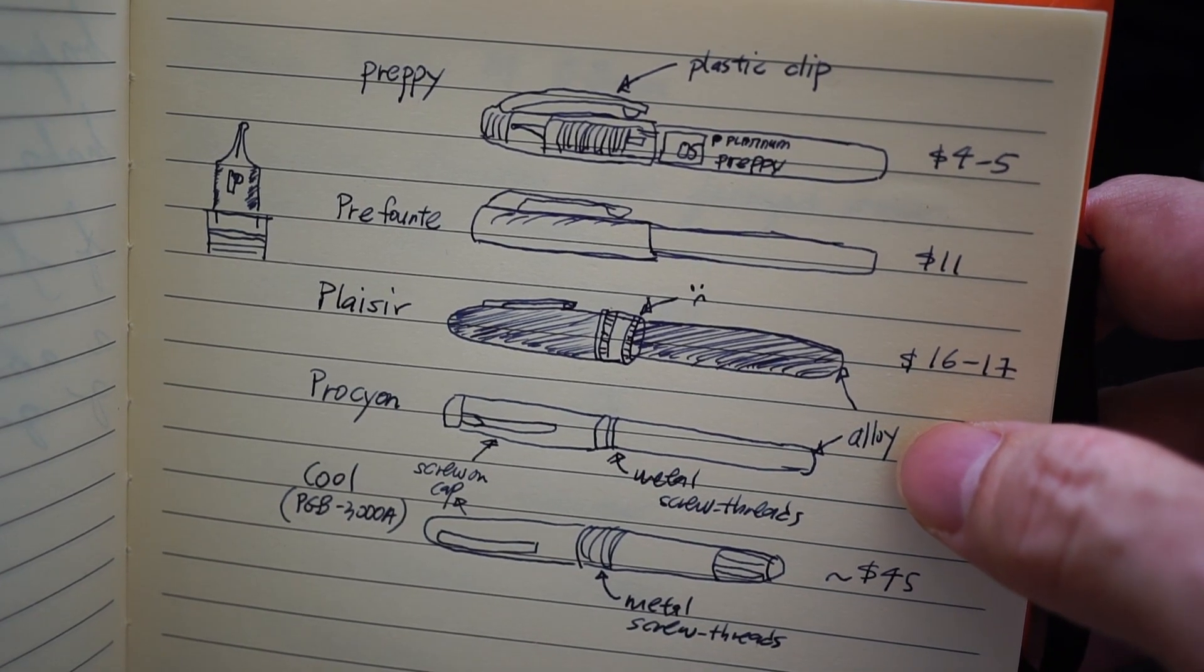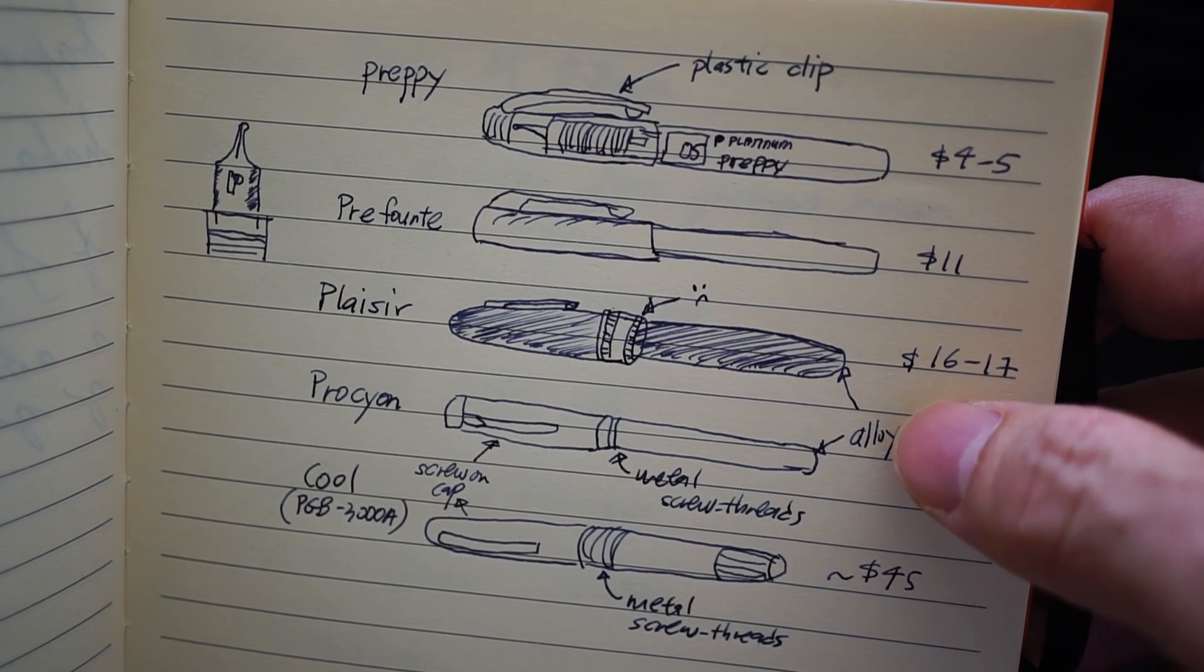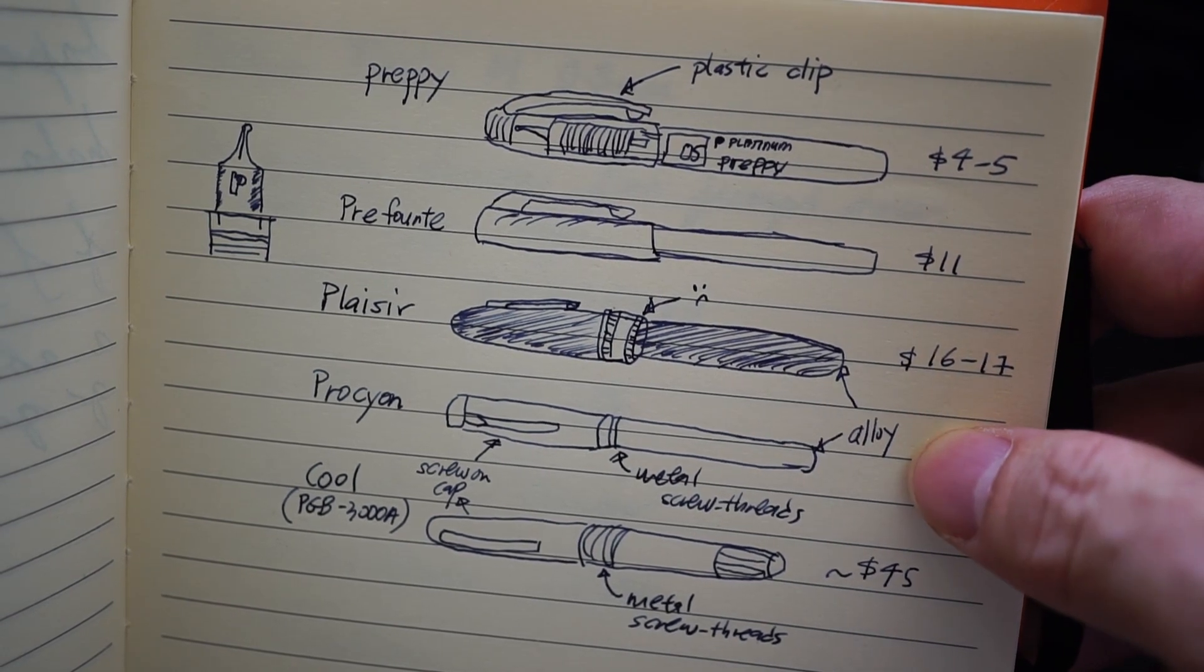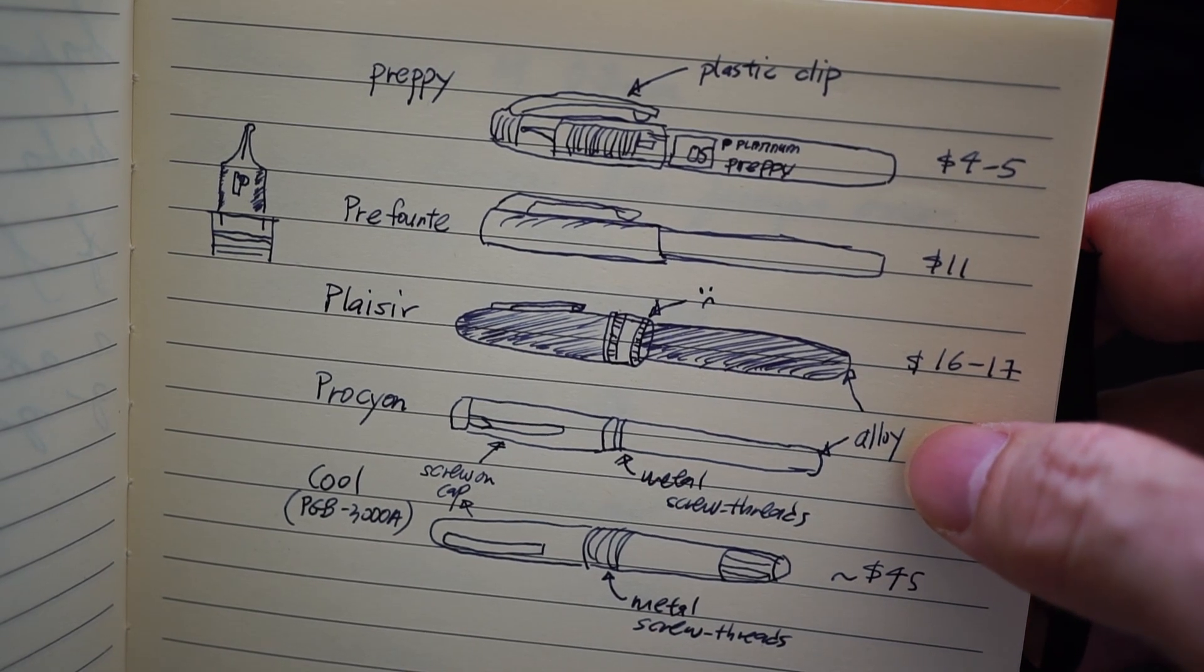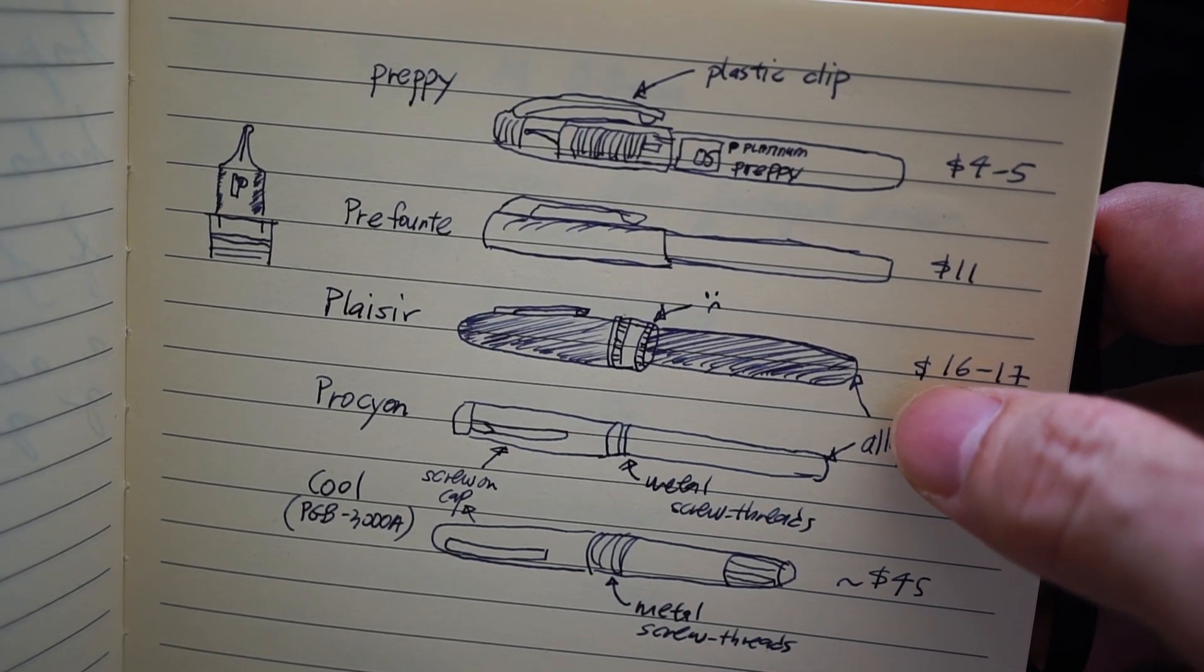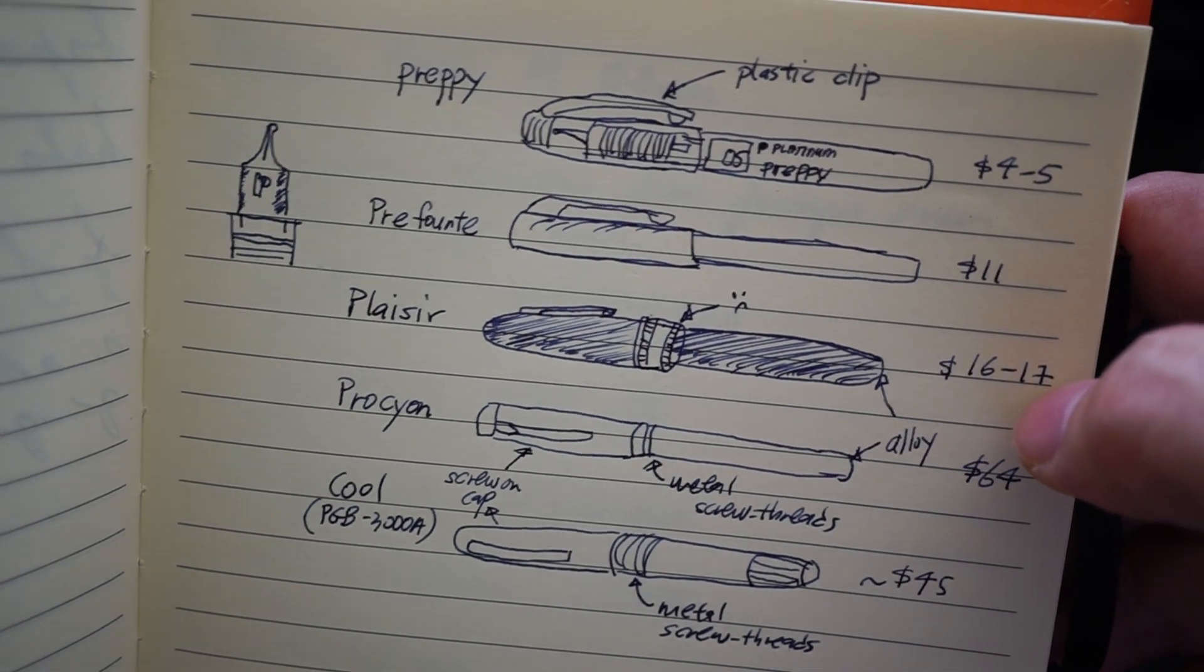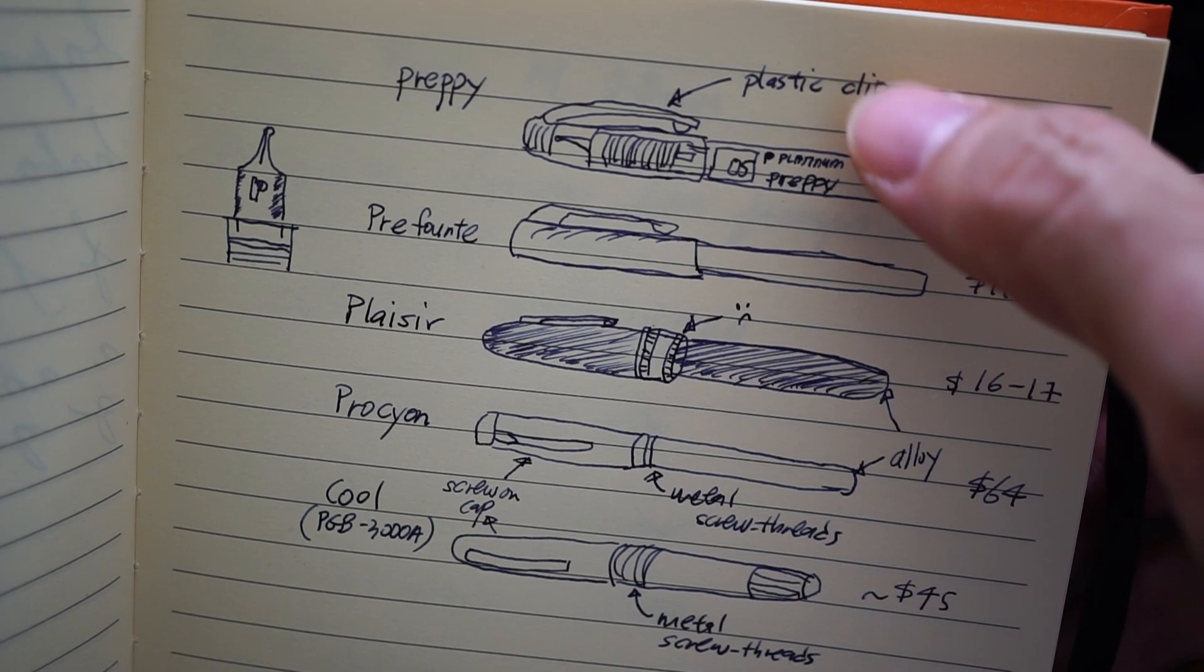First of all, some people actually don't like demonstrator or clear style pens, me being one of them. The other thing is these are alloy which should translate to better durability. Metal is definitely much more robust compared to plastic.